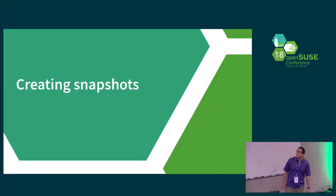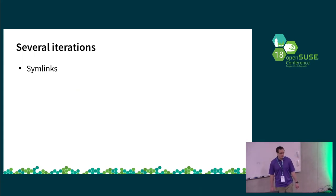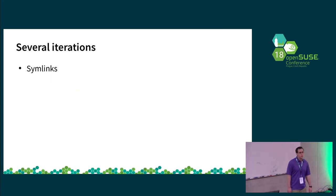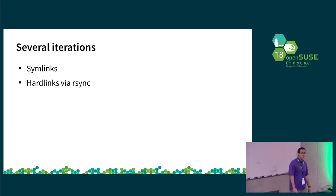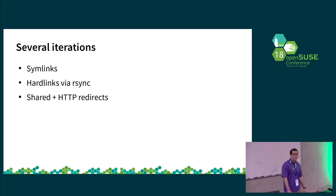Now let's take a look at how the remote snapshots are created. There were several iterations of this. The first one tried to create copies of repositories with symlinks for files in common, to allow mirrors to get their own copy. That was quickly replaced with using hardlinks, which mirrors should be able to handle with rsync. After waiting quite a while without getting official hosting, I ended up deciding to host it myself using Amazon S3, which required a slightly different approach since S3 doesn't support hardlinks — it's not actually a real file system.